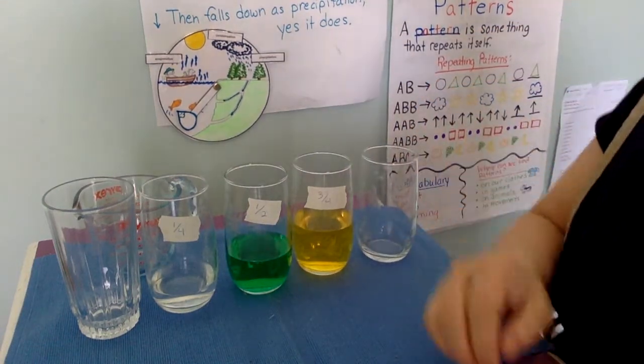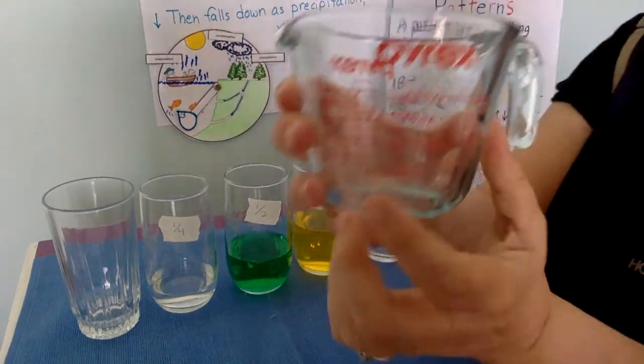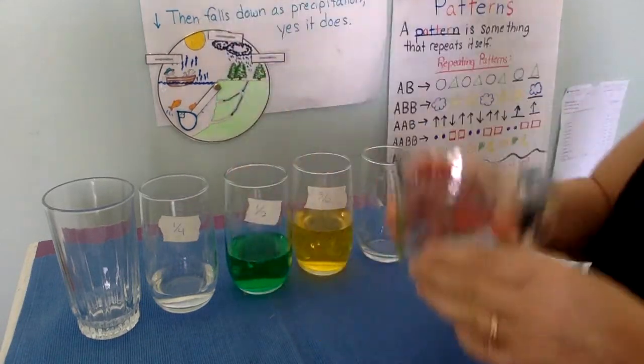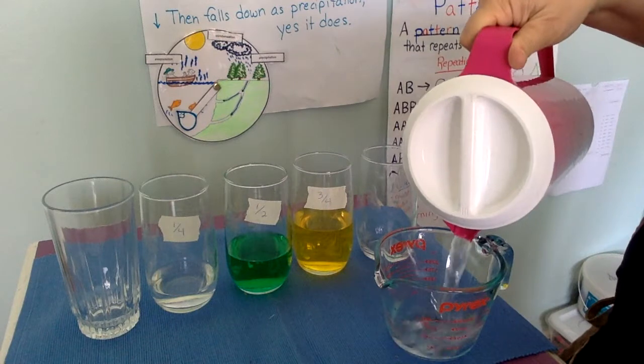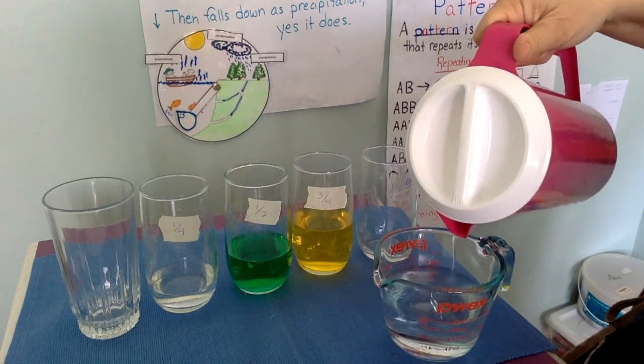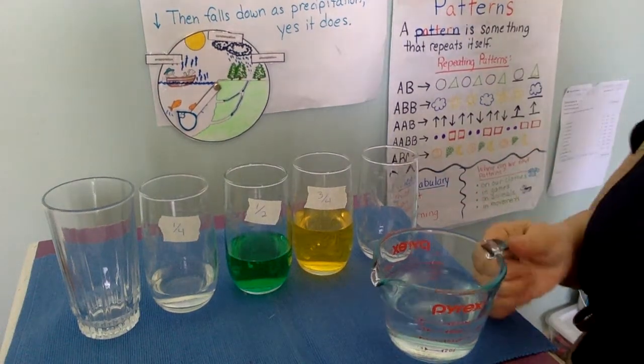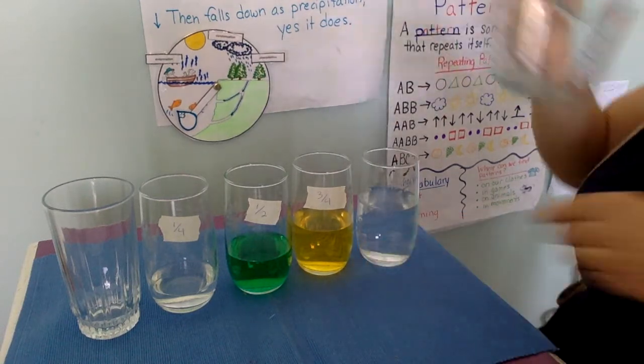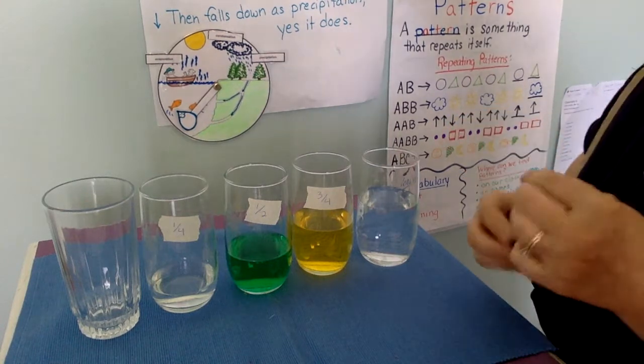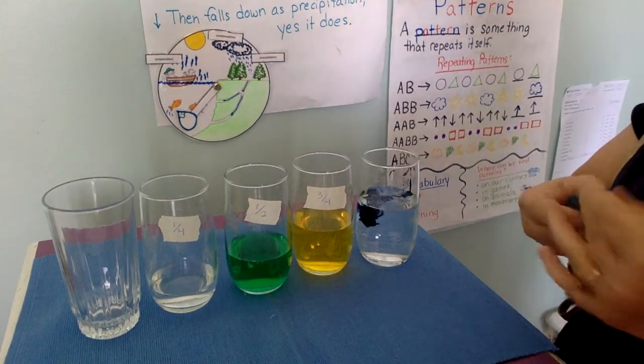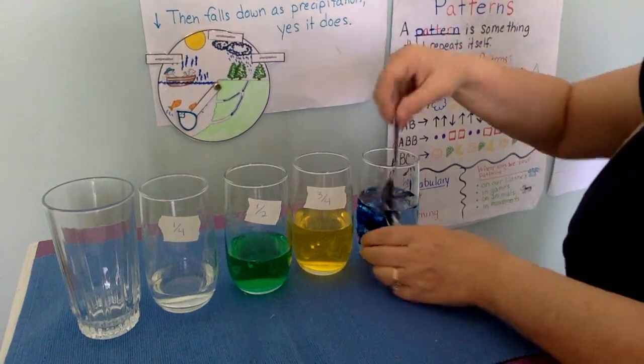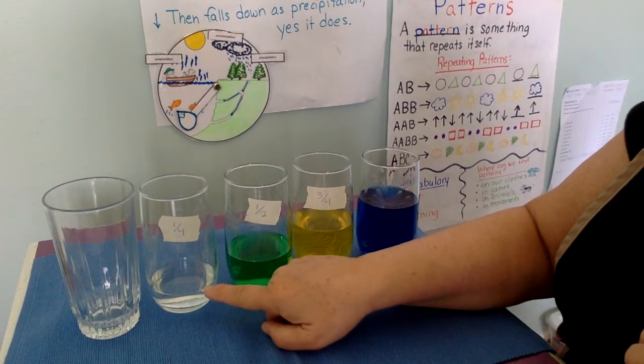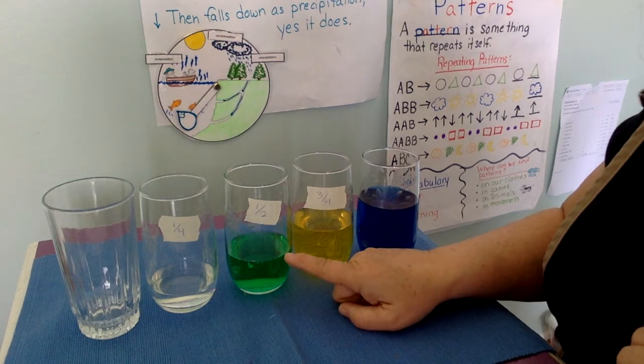And now for this one we're going to give it a whole cup of water, one full cup of water, all the way up to this line right here. Pour it slowly in. And I think I'm going to color this one too. I put in two drops, what color, blue, right? So now we have nothing in this one, a quarter cup in that one, a half a cup of water colored green.